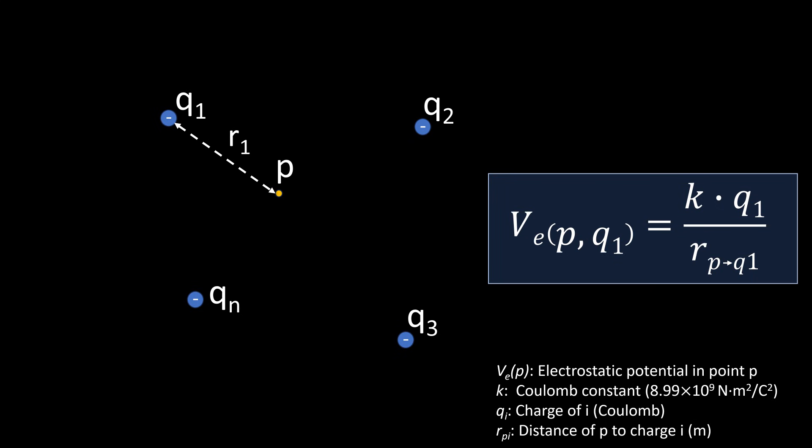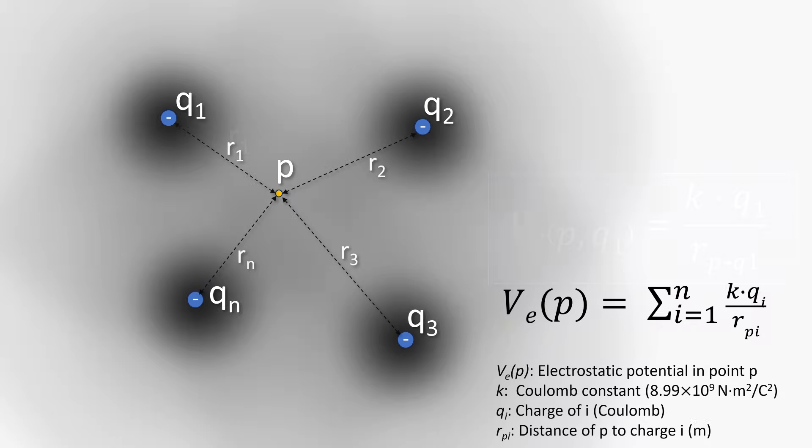Since there are multiple charges, we can calculate the total potential in a point as the sum of the individual contributions, and this results in a total value for the electrostatic potential in that particular point. So that is what is indicated in this formula. The electrostatic potential in point P is the sum of the contributions to the potential by all charges present.